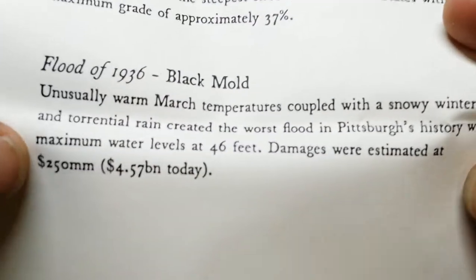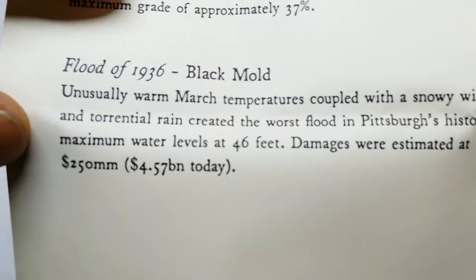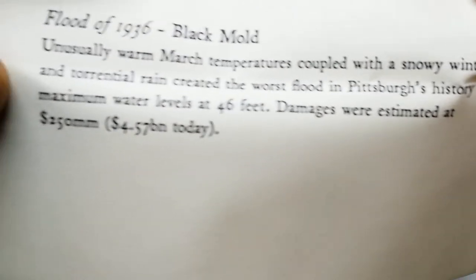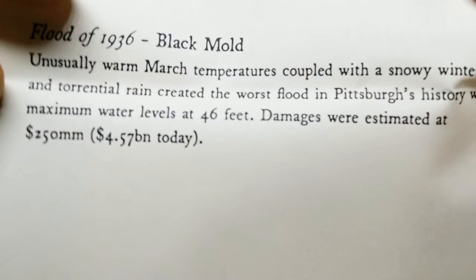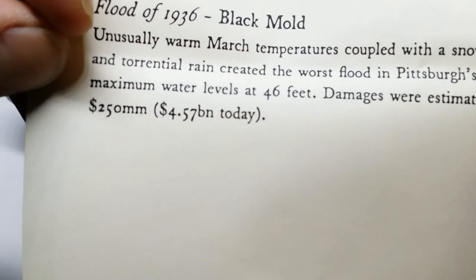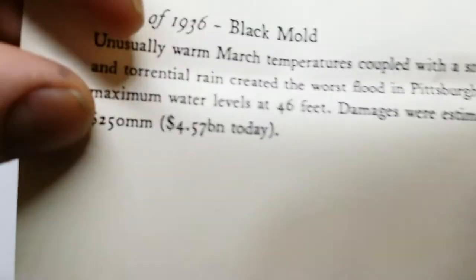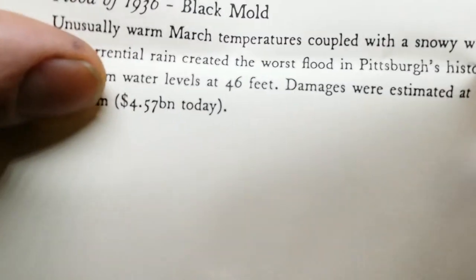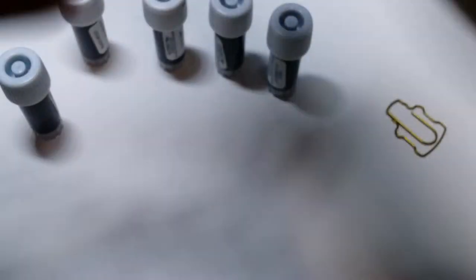Flood of 1936, black mold. Unusually warm March temperatures coupled with a snowy winter and torrential rain created the worst flood in Pittsburgh's history with a maximum water levels of 46 feet. Damage is estimated at 250 million, which would equal 4.57 billion today.